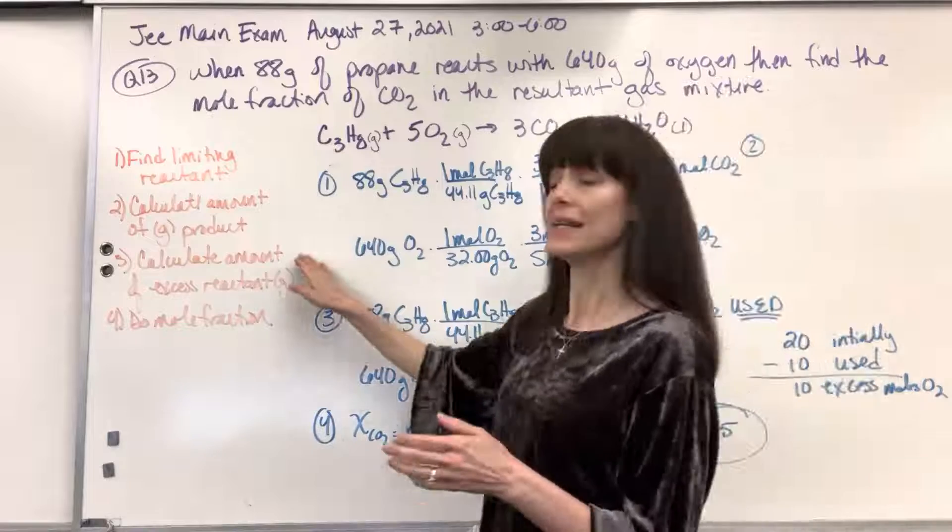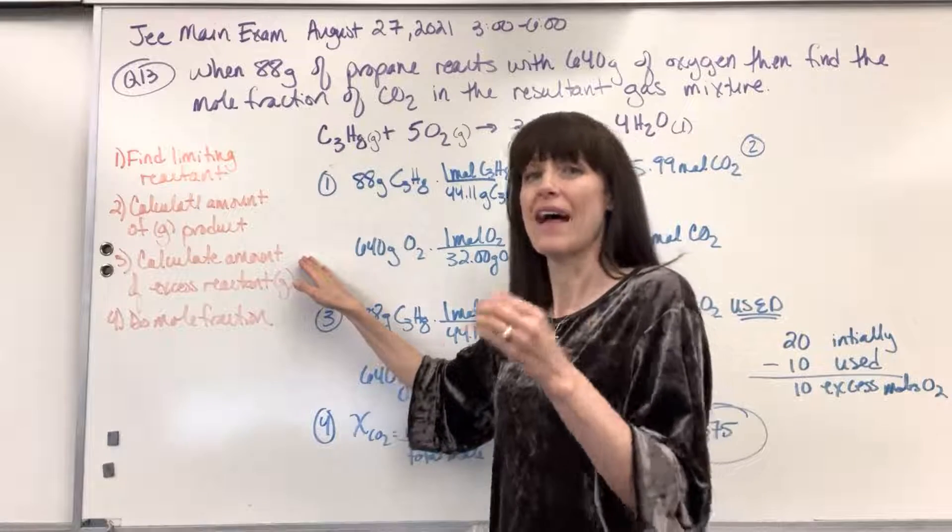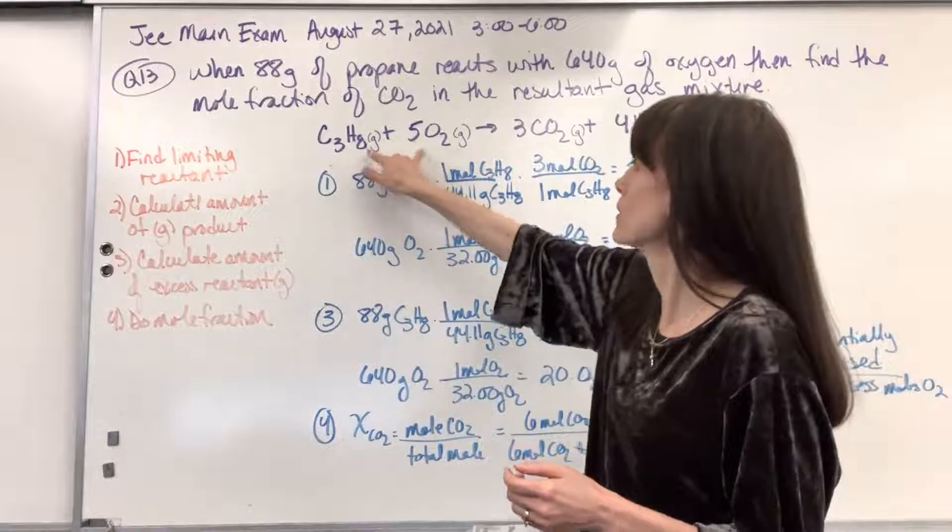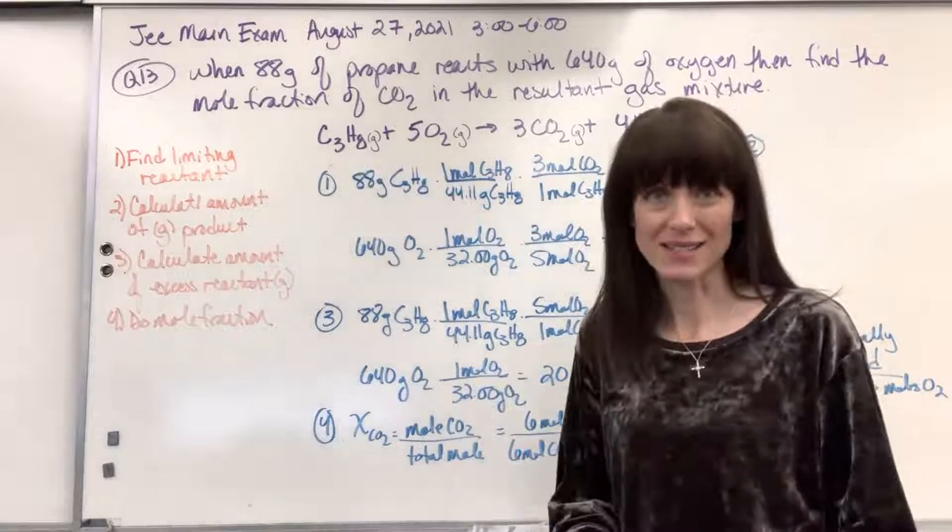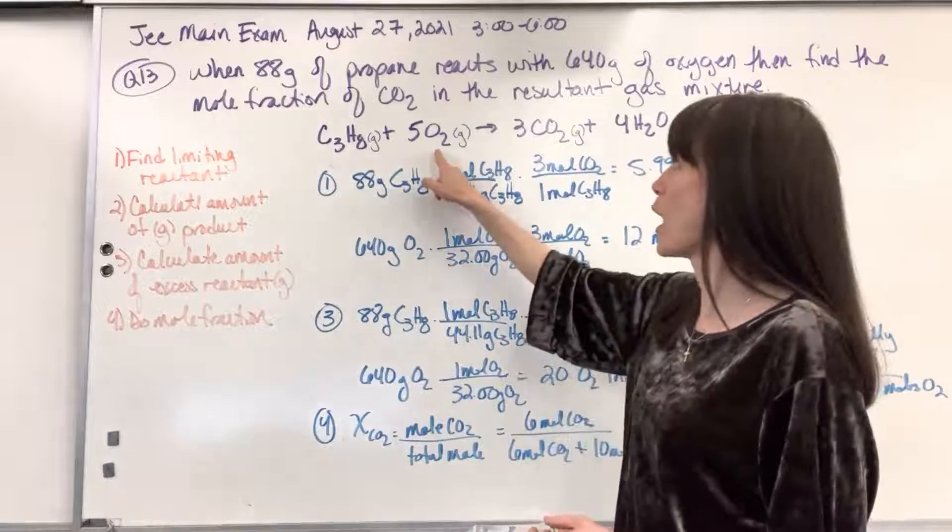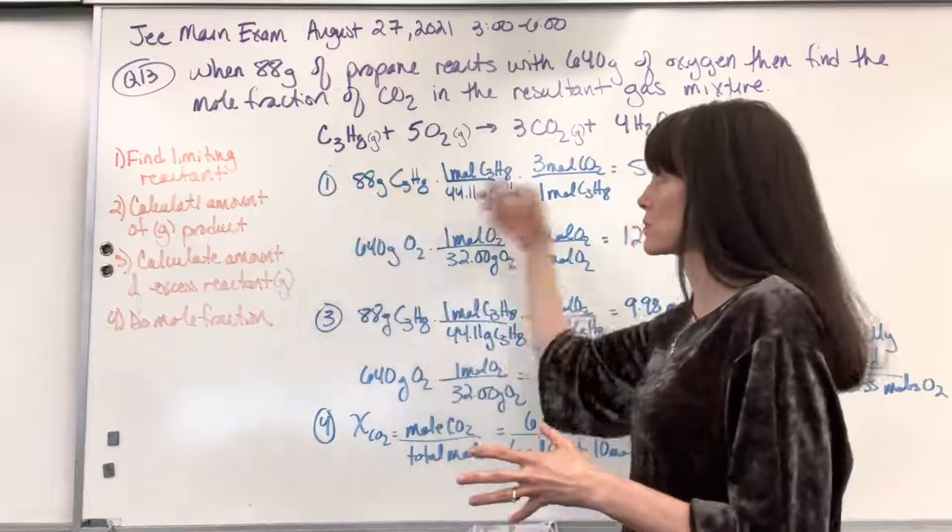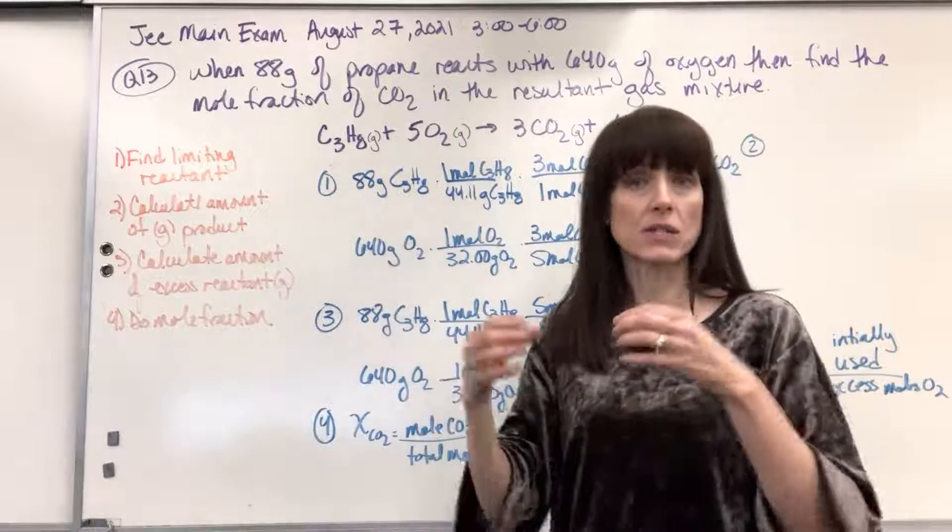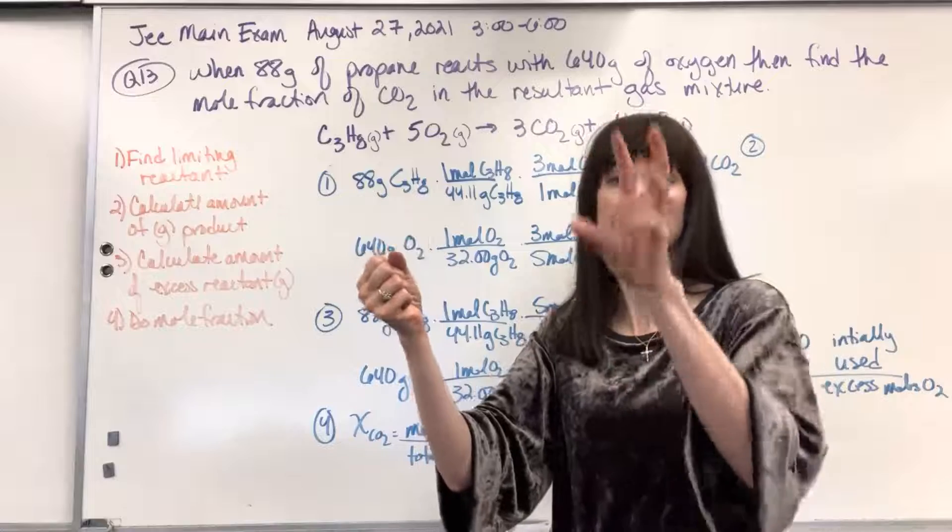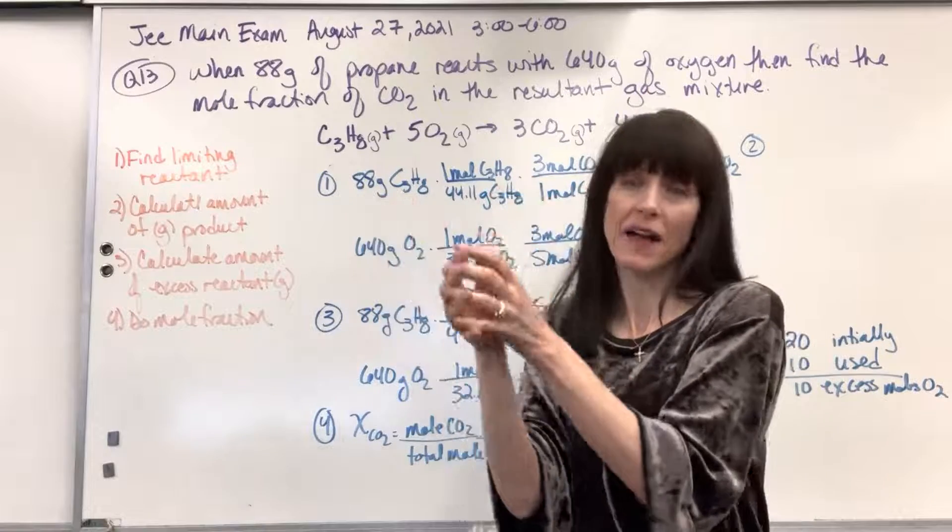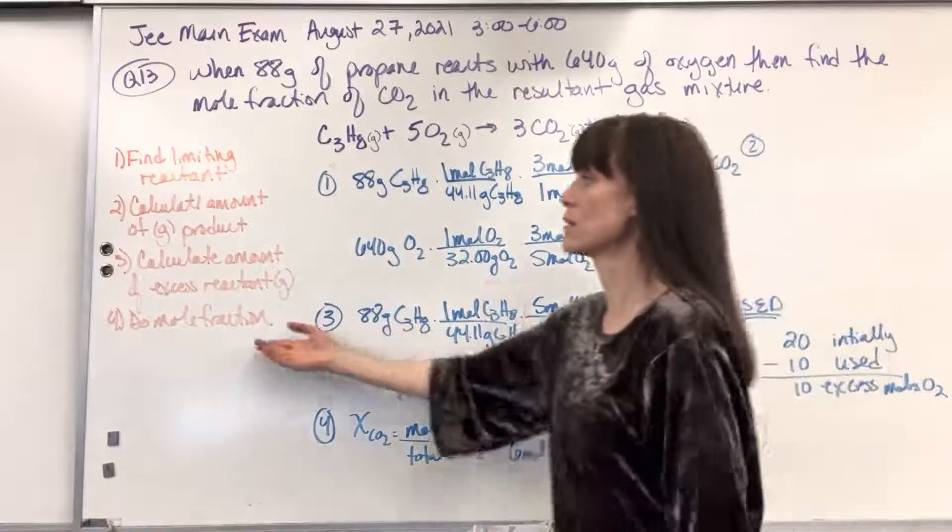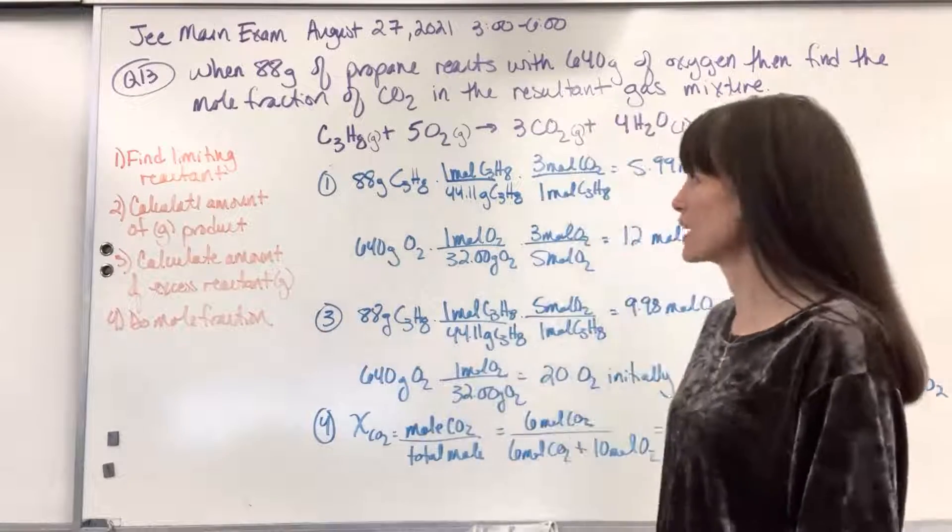Number three, I need to find the amount of excess reactant that's a gas. So I notice both of those reactants are gases. Once I find that excess reactant, I'll need to figure out how much of that gas is left over. Because once this reacts, the limiting reactant is consumed, I'm going to have excess gas from the reactant and then the gas from the product. And that's the mixture of the gases. Last thing, we'll just do the mole fraction at the very end.